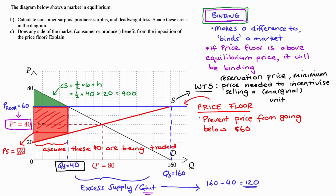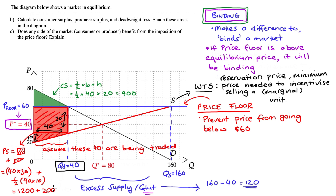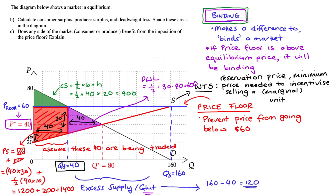The area of producer surplus is a trapezium, which I split into a rectangle plus a triangle. The rectangle has base 40 and height 30 (three blocks), giving 1200. The triangle has base 40 and height 10, giving half × 40 × 10 = 200. So producer surplus PS = 1200 + 200 = 1400. For deadweight loss, using half times base times height: the base is 30 (three squares) and the height is 40 (four squares), so DWL = half × 30 × 40 = 600.